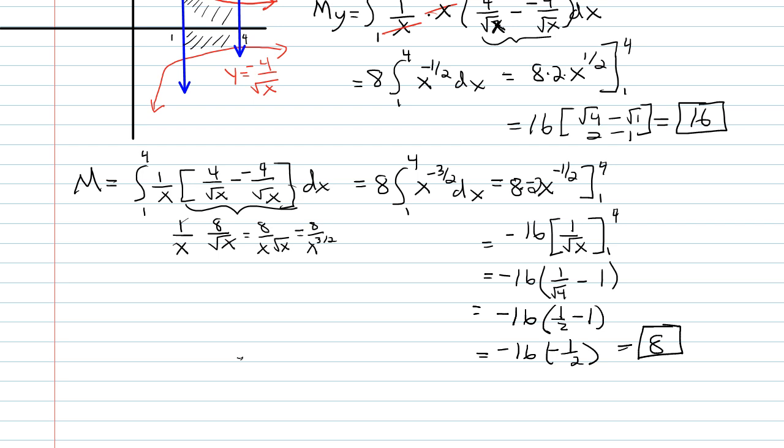And then we finish this off by just writing the formula for x bar. And so we take our 16 from the numerator or 8 from the denominator. The x coordinate of the center of mass is 2.